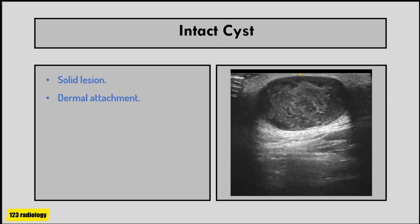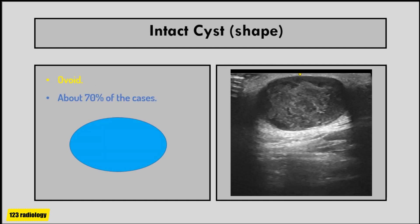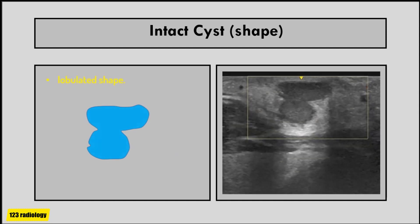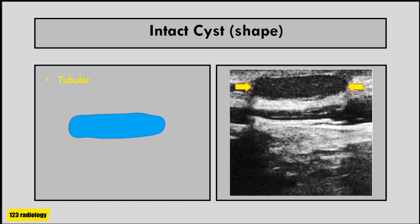Epidermal inclusion cyst most of the time appears as a solid lesion with a dermal attachment. The shape of an intact cyst can be ovoid, rounded, lobulated, or tubular. Ovoid shape is the commonest, seen in approximately 70 percent of cases. It can be rounded with well-defined margins, or have a lobulated shape, or it can be tubular as seen in some cases.